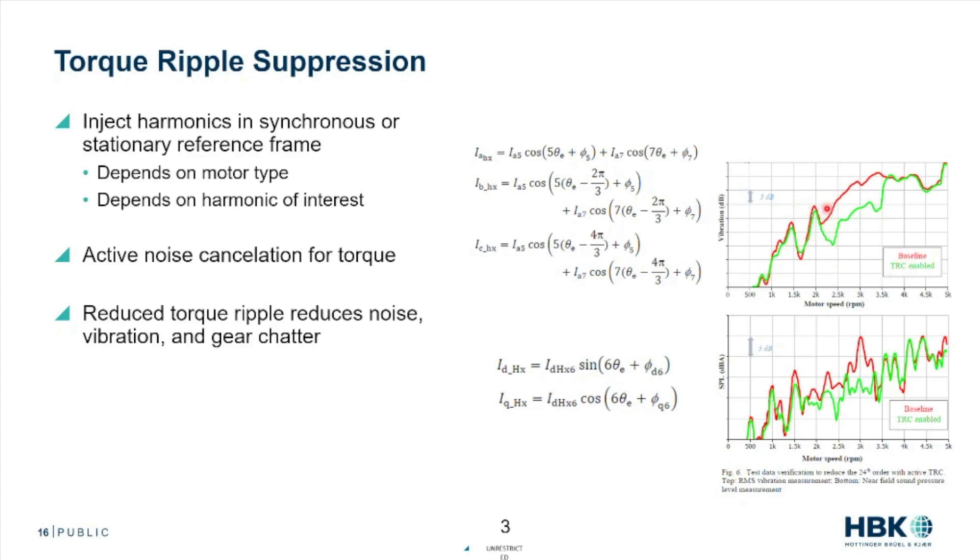They turn on their torque ripple compensation at about 2200 RPM and we can see that vibration notably decreases just by injecting that harmonic. We can see that sound power level notably decreases just by injecting those harmonics and reducing the torque. So we can use clever tools like harmonic injection to create a better experience from the machine.